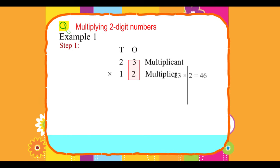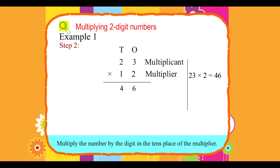23 times 2 equals 46. Step 2: Multiply the number by the digit in the tens place of the multiplier.